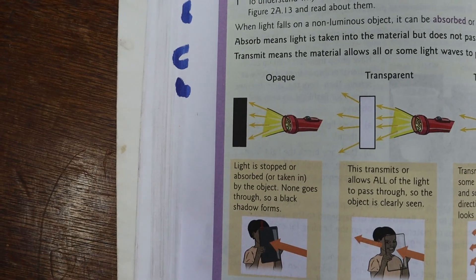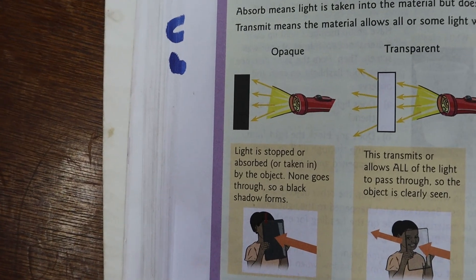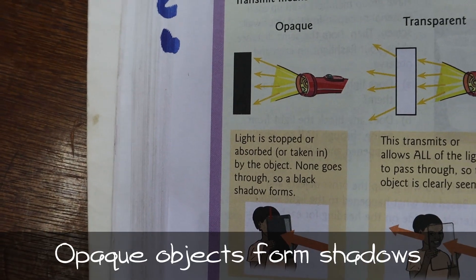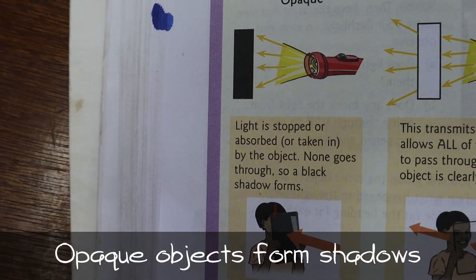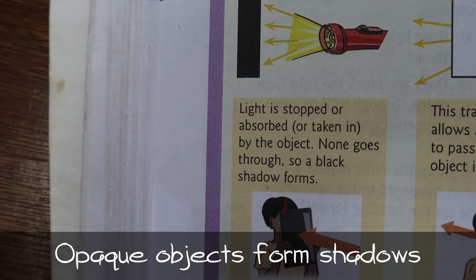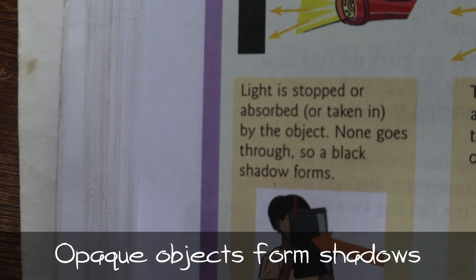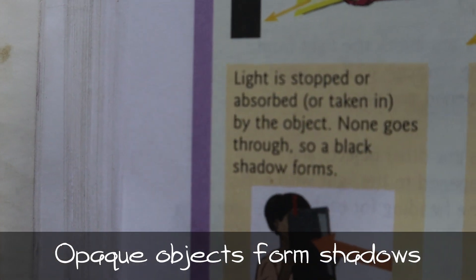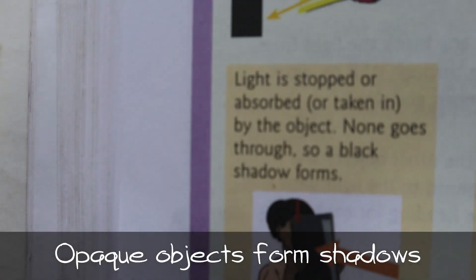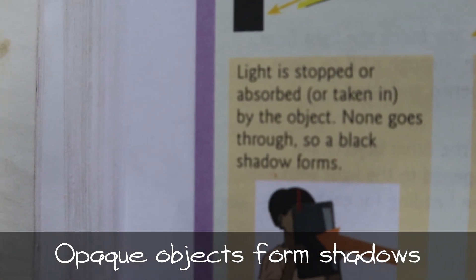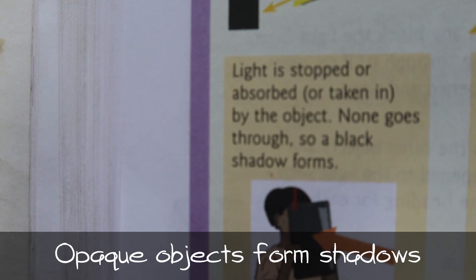Opaque. Light is stopped, absorbed, or taken in by the object. None goes through, so a black shadow forms.